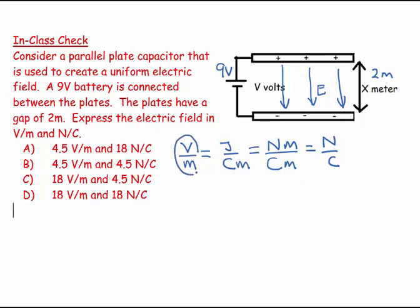So 10 volts per meter is the same as 10 newtons per coulomb. 15 volts per meter is the same as 15 newtons per coulomb. So we can just switch back and forth between the two.